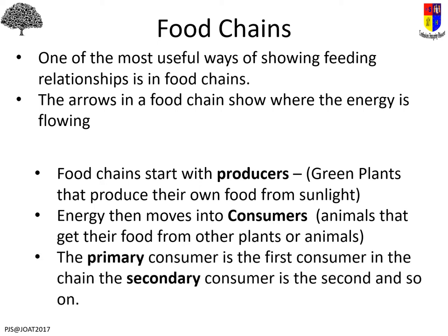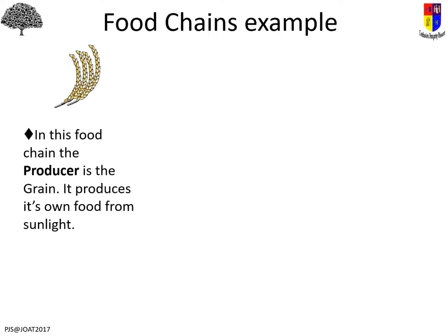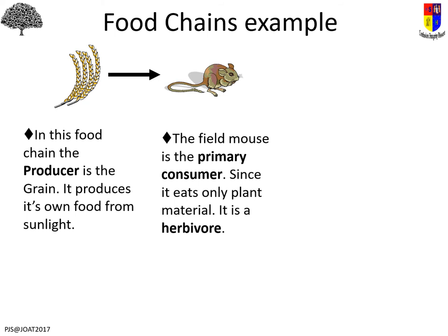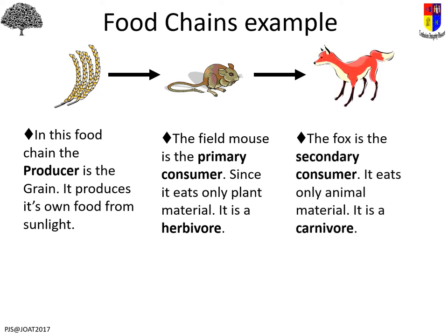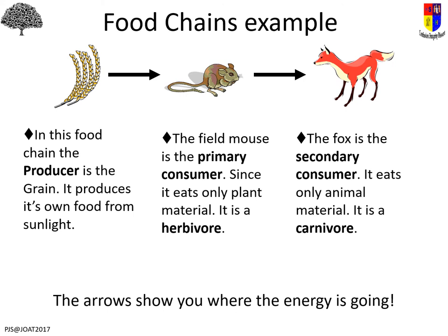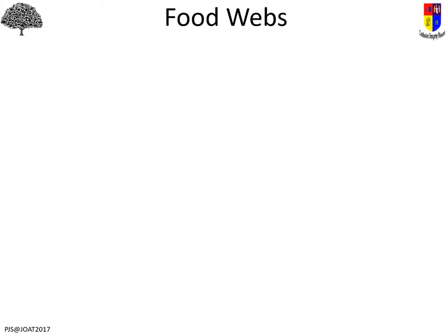The primary consumer is the first one to feed on the producer. The secondary consumer feeds on the primary consumer. For example: green plants are the producer, making their own food from sunlight. The energy goes to a field mouse — the primary consumer, a herbivore that only eats plant material. Then a fox is the secondary consumer because it feeds on the primary consumer, only eating animal material, making it a carnivore. The arrows show where energy is going.